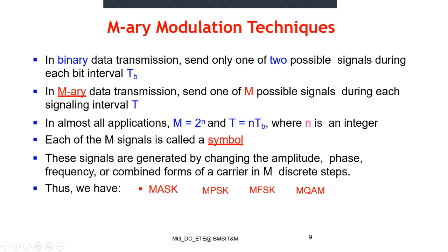Each of the M signals is called a symbol. These signals are generated by changing either amplitude, phase, frequency, or a combination. Accordingly, we call them M-ary amplitude shift keying, M-ary phase shift keying, M-ary frequency shift keying, and M-ary quadrature amplitude modulation. In M-ary ASK, the amplitude of the carrier changes according to the data stream. In M-ary PSK, the phase changes. In M-ary FSK, the frequency changes. In QAM, both amplitude and phase change.